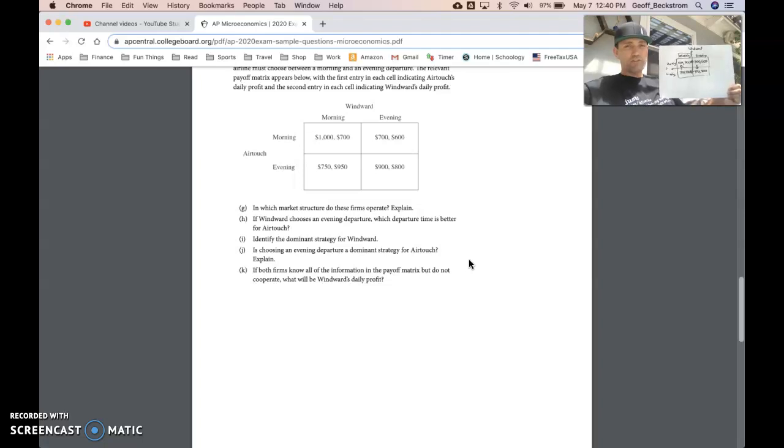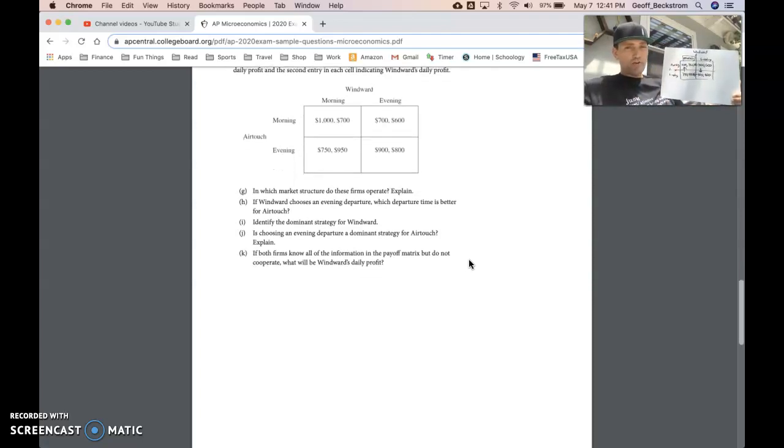If Windward chooses evening, which departure is better for Air Touch? It's quite easy. So Windward chooses evening over here. Air Touch is now choosing between these two, and evening is best for Air Touch. Identify the dominant strategy for Windward. That's morning. We already went through that. Is choosing evening a dominant strategy for Air Touch? It is not a dominant strategy because if Windward chooses morning, it's better for Air Touch to leave in the morning. But if Windward chooses evening, it's better for Air Touch to leave in the evening. That's what your explanation should say.